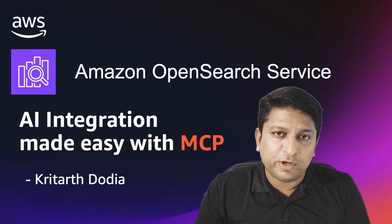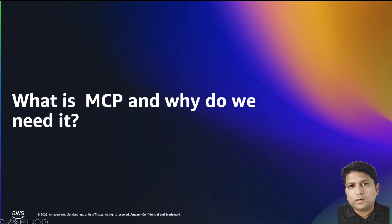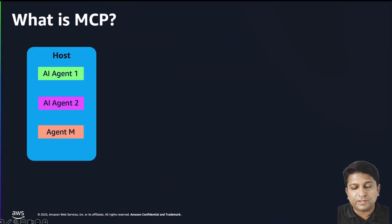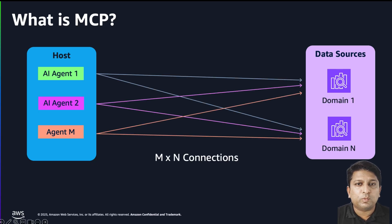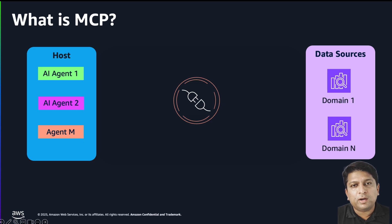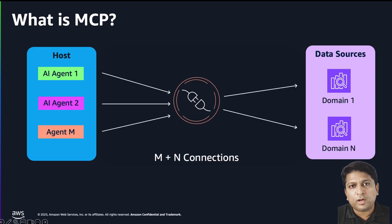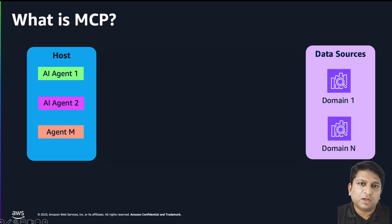Then we will get into a live demo where I will query data from OpenSearch Service domain in real time right from my VS Code terminal using the Q CLI. Now let's understand what Model Context Protocol is and what benefit it brings. In today's world of growing agentic AI applications, assume there are M AI agents that need to connect to OpenSearch Service domains to build additional context. Traditionally you would have to write one-to-one connectivity between each AI agent and the OpenSearch domain, resulting in M×N connections. With MCP, you can build a centralized component that simplifies those M×N connections into M+N connections.